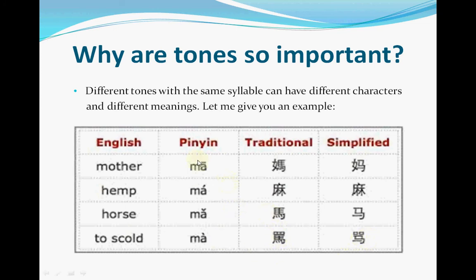Let me give you an example. From this table we can see the same pinyin 'ma' with four different tones. The first tone: mā — this character means mother. The second tone: má — this character means hemp. The third tone: mǎ — this character means horse. The fourth tone: mà — this character means scold. See, the same pinyin with different tones gives totally different characters and totally different meanings.